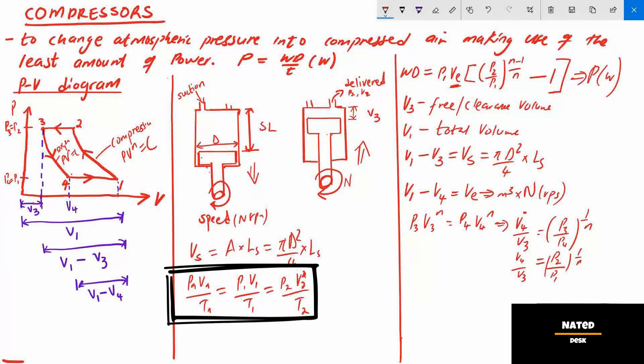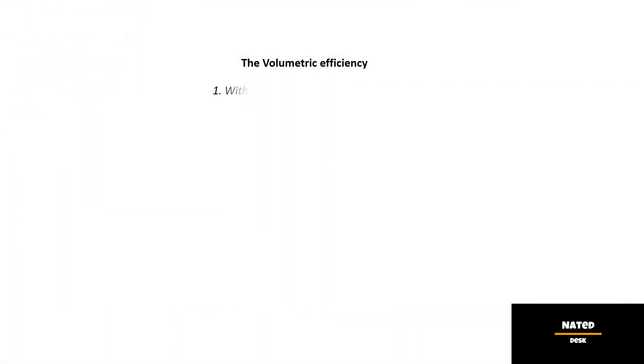But in this formula, total volume V1 equals VE. We also have two volumetric efficiency formulas. Formula 1 is with reference at inlet condition, is equal to effective volume VE divided by stroke volume.